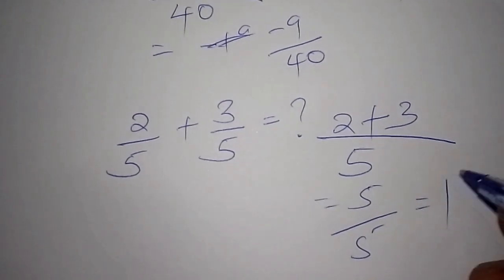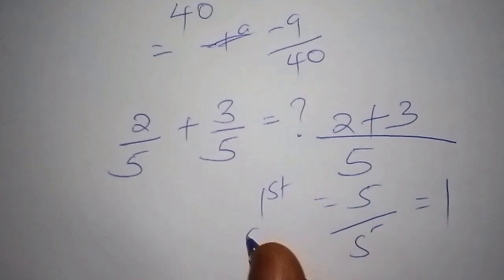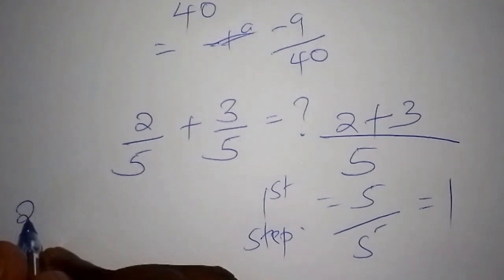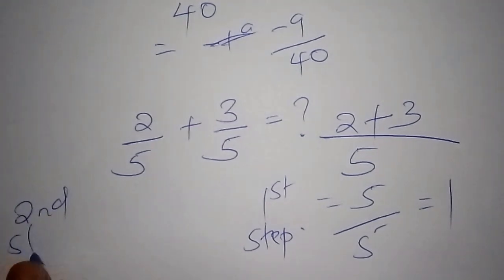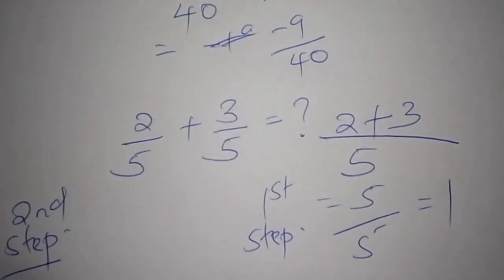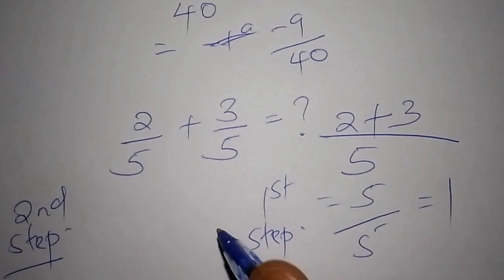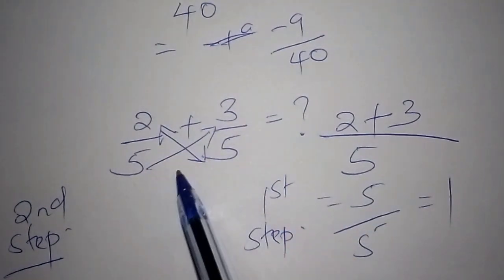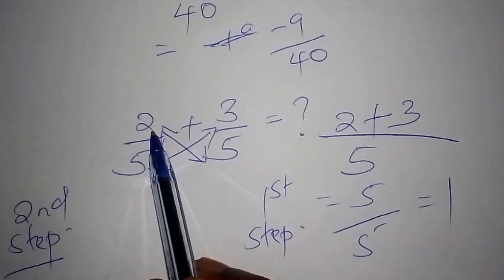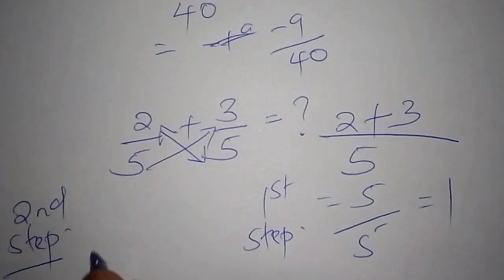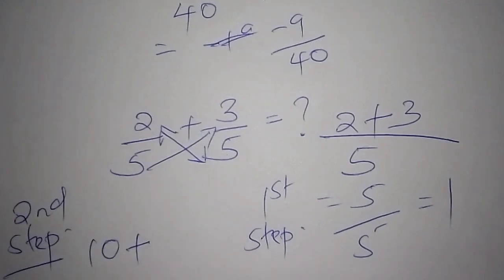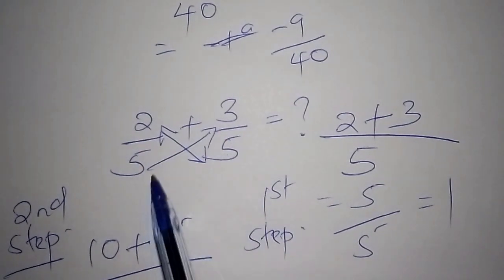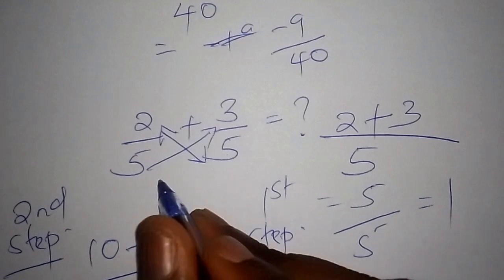5 over 5 is the same as 1. Now for the second method, we cross-multiply: 5 by 2 gives 10, plus 5 times 3 gives 15, all over 5 times 5.